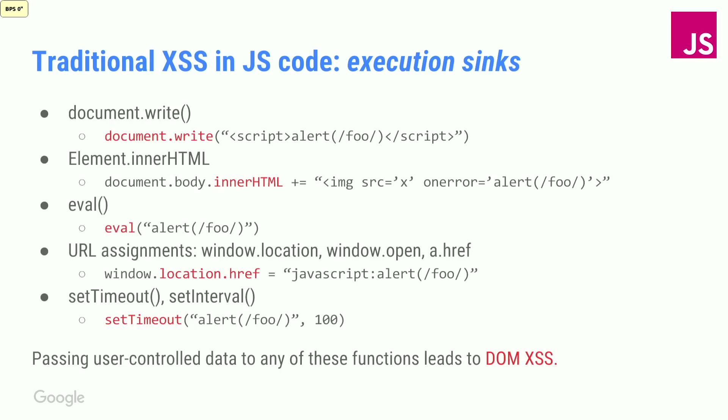Traditionally, as JavaScript developers, we didn't have to worry too much about the various ways you can introduce XSS, because when you write pure JavaScript code there are only a few APIs that could lead to cross-site scripting — things like setting innerHTML, document.write, eval, setting URLs to JavaScript URIs, for example window.open or navigation. Maybe five years ago, if you kept all of those in mind when writing your JavaScript code, you would be safe from 95% of bugs.